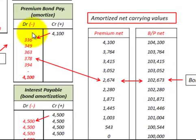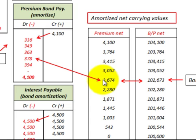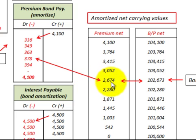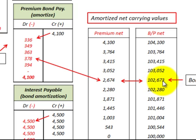We amortize that premium amount down to the date that we want to convert the bonds, so we have to figure out what our carrying value is at the date of conversion. In this case we had a premium amount of $2,647, and the net carrying amount of the bond was $102,673. That's the figure we will work with when we convert those bonds into common stock.